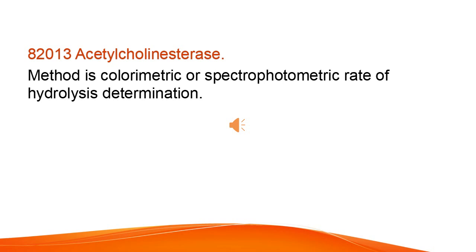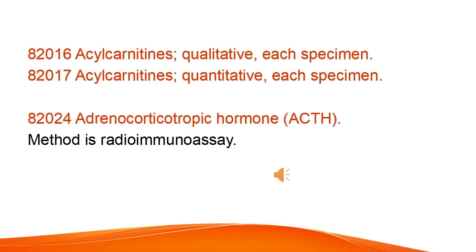Acetylcholinesterase: Methods may include colorimetric or spectrophotometric rate of hydrolysis determination. Acetylcarnitines: qualitative and quantitative, each specimen. Adrenocorticotropic hormone (ACTH): method is radioimmunoassay.